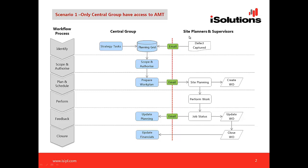In both scenarios the process is the same. Looking at the workflow, the first step is identifying the work that needs to be performed, which comes from two sources. The first is strategy tasks in AMT — sometimes called maintenance plans — covering scheduled planned work, PM services, and component changeouts. AMT will automatically create work orders for those when they are due.